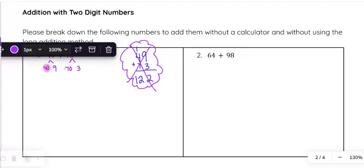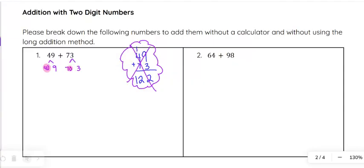I would add what we call our place value pieces. That would be the 40 and the 70, so this 4 and the 7 represent 40 and 70. 40 plus 70, when you add those two together, 4 plus 7 is 11, so 40 plus 70 is 110, plus 9 and 3, when you add 9 and 3 together, you get 12.